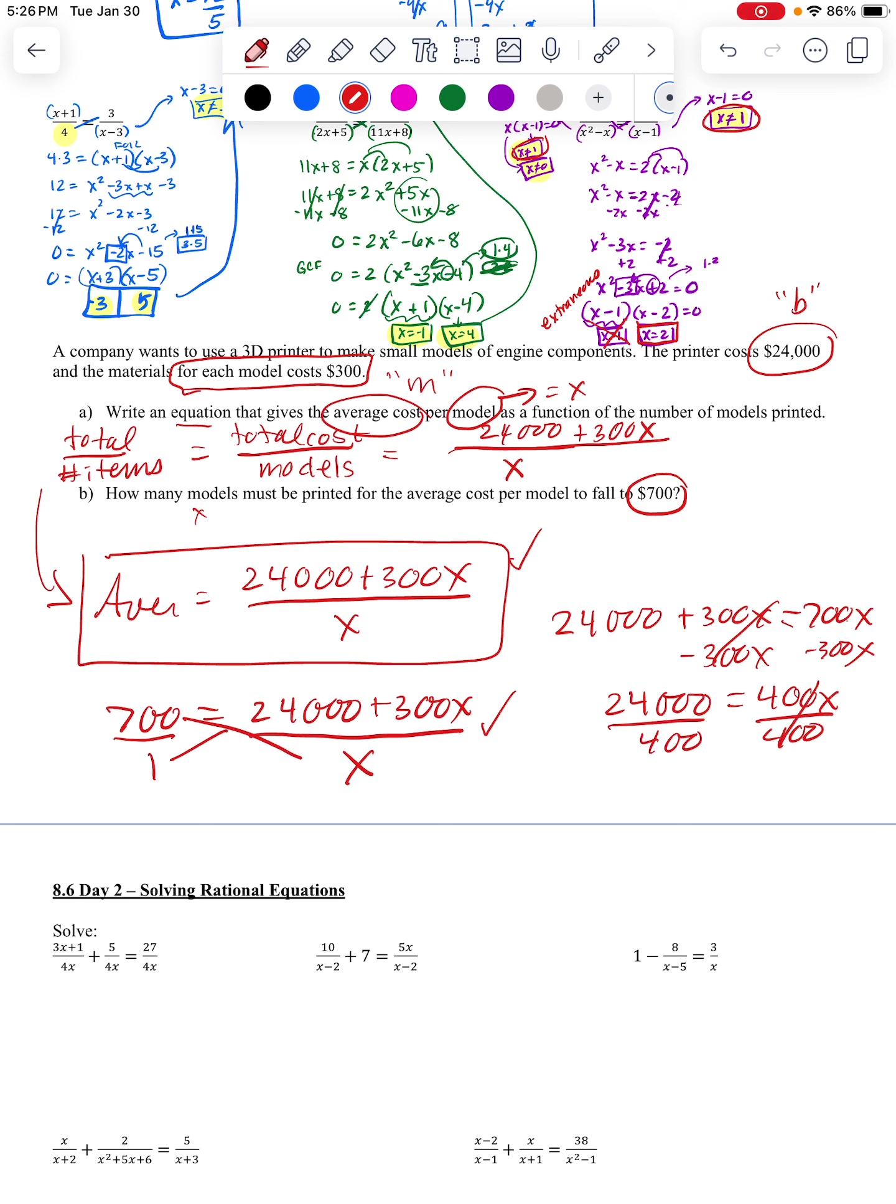we always have to divide by the number attached to X. So we're going to do that. And when we do that, we end up with X equals 60. And that's representing the number of models we can make in order to have an average cost of 700.